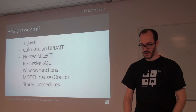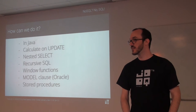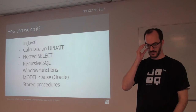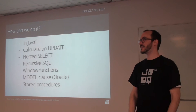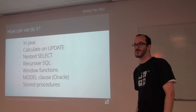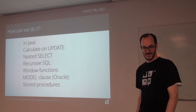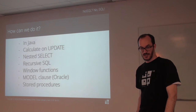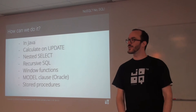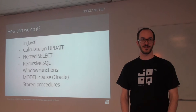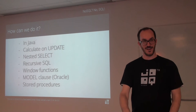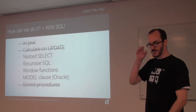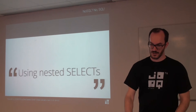You could obviously do it with Java — calculate the balance on update with Java or a stored procedure and write it in. That's probably useful when you have an accounting system where you must never change values. You could do it with a nested select, or with recursive SQL — nightmare, every DBA knows. The window functions example we've already seen. There's also a MODEL clause only in Oracle — that's going to be very awesome. And you can do it with stored procedures. But we're going to look at the SQL choices, so let's do the nested select example.